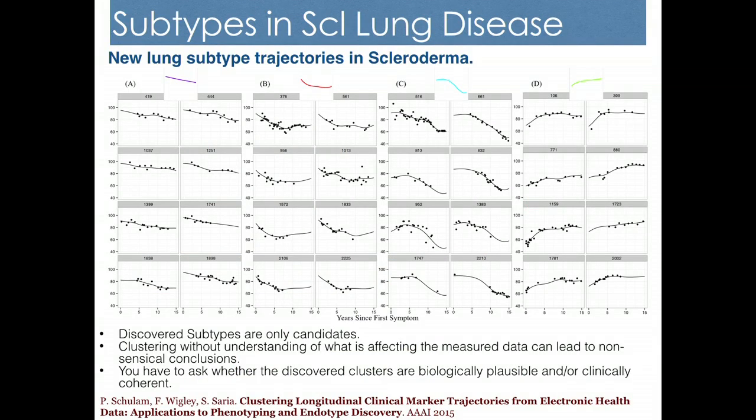From the same messy data shown earlier, we are discovering new subgroups of scleroderma patients — subgroups that previously didn't exist as known classifications in the field. For instance, the third category shows what we now call 'late decliners' — people doing pretty well who suddenly go through a decline. The natural question is why. There are also people who have a rapid drop and then stabilize. Can we distinguish those who stabilize from those who never manage to?